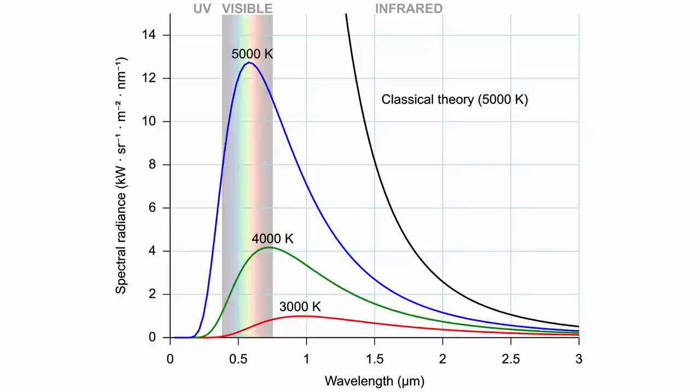When a blackbody is at a uniform temperature, its emissions have a characteristic frequency distribution that depends on the temperature. This is what is referred to as blackbody radiation.